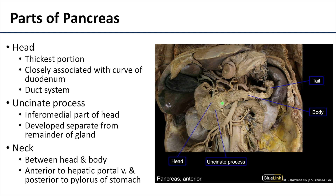The neck of the pancreas is located between the head and the body. It is important due to its relationship to the hepatic portal vein — the neck is located anterior to the hepatic portal vein. So if you have any issues with the parenchyma of the pancreas, it could actually affect the portal vein deep to it.